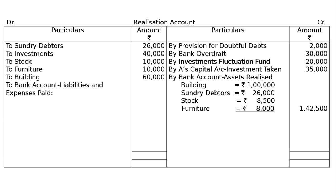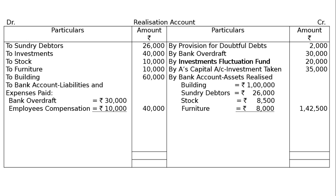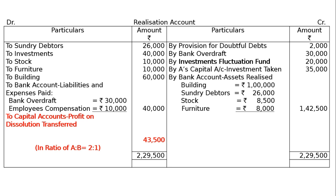On the debit side, to bank account — liabilities and expenses paid. Compensation to employees paid by the firm amounted to 10,000 — this liability was not provided in the balance sheet. Bank overdraft 30,000. Both amount to 40,000. The credit side is higher; totaling is Rs. 2,29,500. The profit on dissolution is transferred in the old ratio of 2 is to 1. The difference is Rs. 43,500 — A gets Rs. 29,000 and B gets Rs. 14,500.